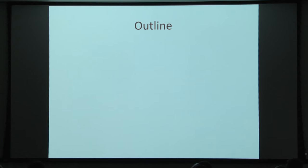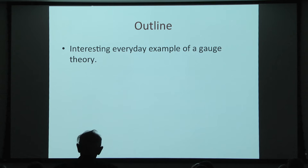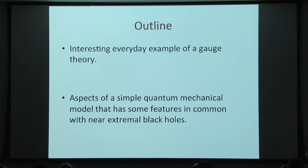The outline of this talk will be two different topics. The first will be related to those papers in the sense that we'll try to give an everyday example of gauge symmetry and gauge theory. The second is we'll discuss some aspects of a quantum mechanical model that arises from condensed matter theory that has some features in common with near-extremal black holes.